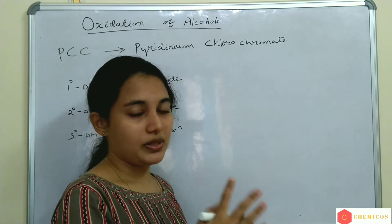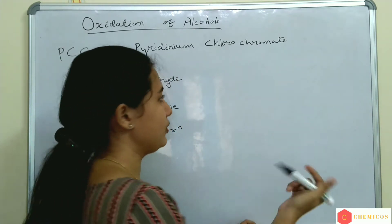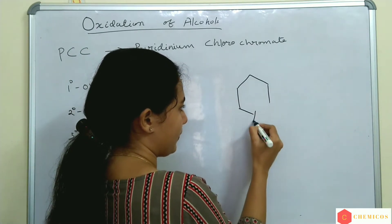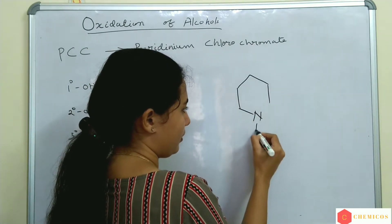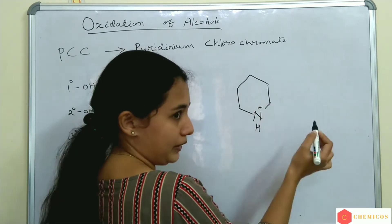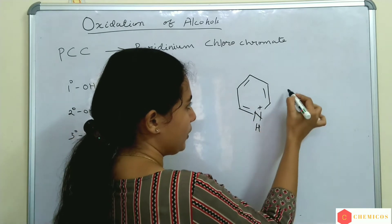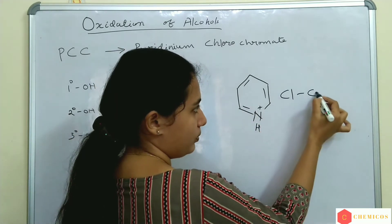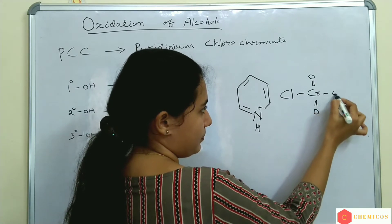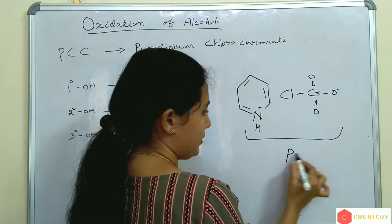We can write the structure of PCC using the radicals in the name itself. Pyridine — this is Pyridine. Then chloro and chromate. This is the structure of PCC: Pyridinium chlorochromate.